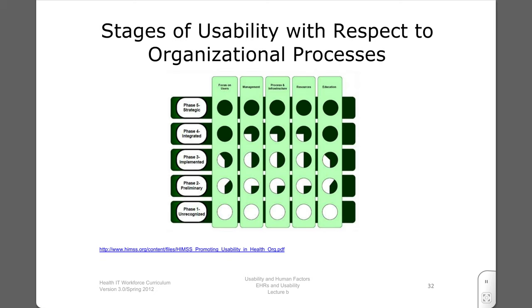This slide shows the phases of usability in an organization and how they relate to users, management, processes, resources, and education. In the unrecognized phase, none of these has any focus on usability. As an organization enters the preliminary phase, the focus on users and education has increased, with little attention to the other three aspects. In the implemented phase, users and education may be two-thirds complete, while management, process, and resources may not be fully committed or organized for usability. Finally, in the strategic phase, all five areas are fully functional.